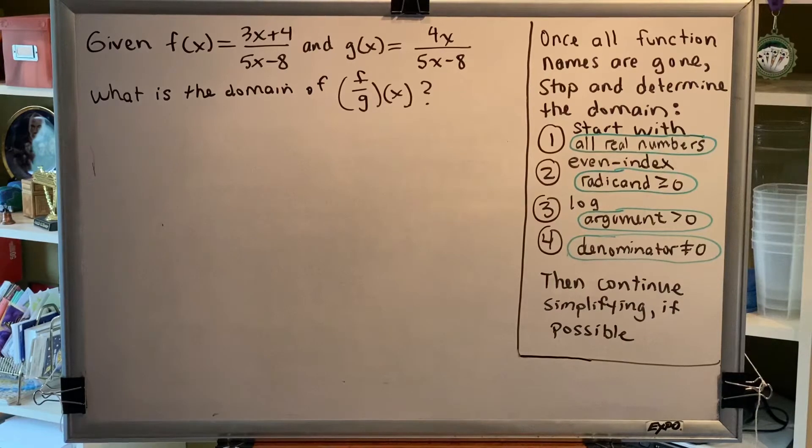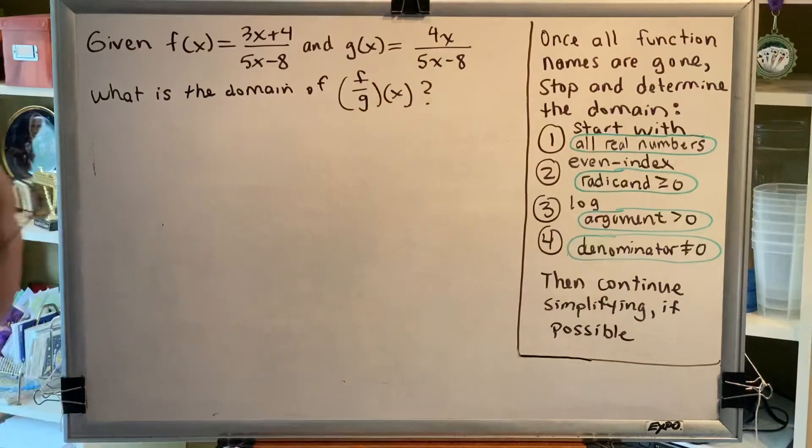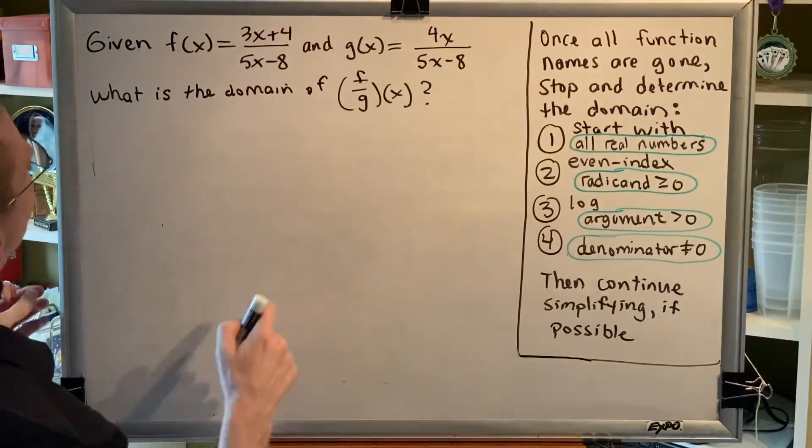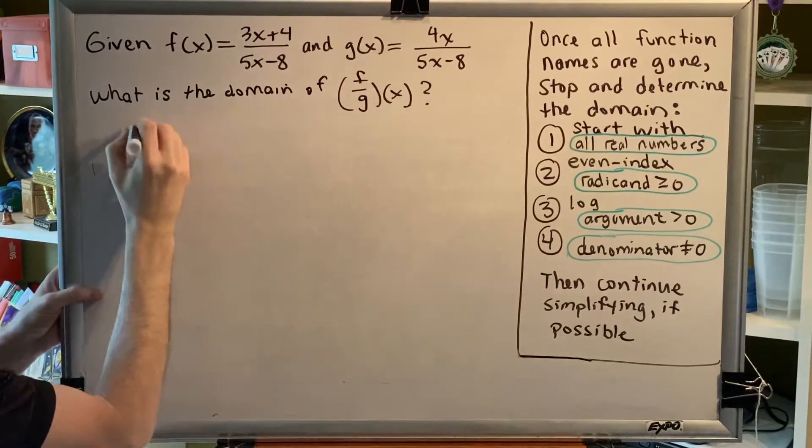Notice that we're not asked to find f over g of x, we're only asked to determine its domain. Nonetheless, we will still create it. This means take the two functions f of x and g of x and divide them.